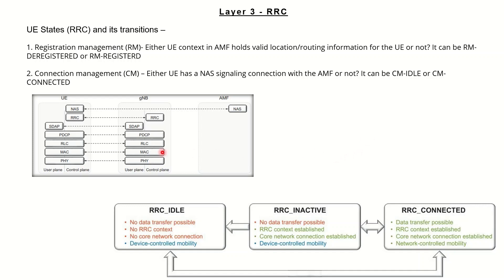In layer 3 RRC, the user starts getting in touch with the core network. There are different states which show how the user is connected to or controlled by the core network. There are three different states: idle, inactive, and connected mode.